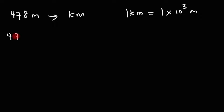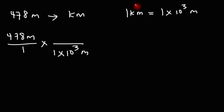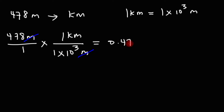To convert, start with what you're given: 478 meters over 1. In the next fraction, put the conversion factor. Since meters is on top, to cancel it we put 1 times 10 to the 3 meters on the bottom and 1 kilometer on top. We need to set up the fractions so the unit we're converting from cancels and the unit we want remains. This becomes 478 divided by 1,000, which gives us 0.478 kilometers. That's how you do a one-step conversion problem.